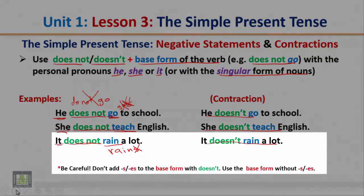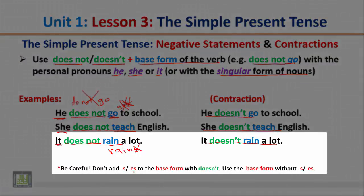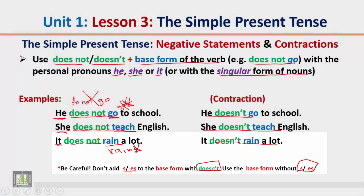Be careful — don't add S or ES to the base form with 'doesn't'. Whenever you use 'doesn't', delete the S or ES. We cannot say 'it doesn't rains' — delete the S. So whenever you use 'does' or 'doesn't', delete the S or ES and use only the base form of the verb.